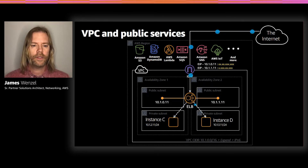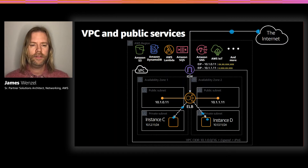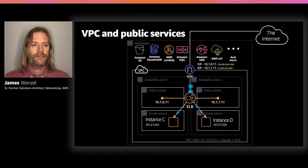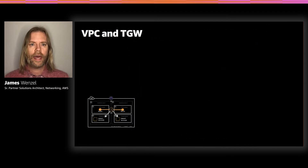Also note that the Elastic Load Balancer has two external IP addresses — anything that you can figure out would actually be on the internet. So let's take a look at putting our VPCs together.